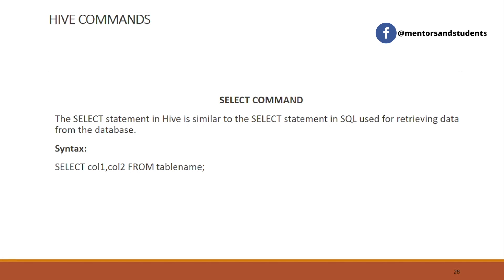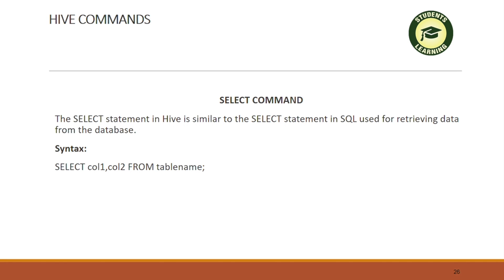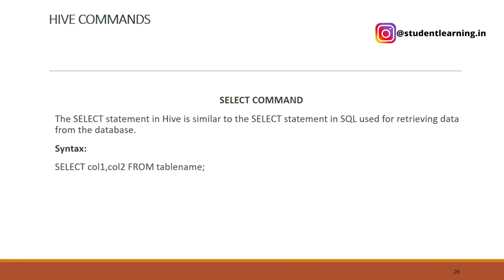The next command is select command. With the help of select command, we can retrieve data from the database. We write SELECT column_list FROM table_name. For example, to retrieve columns name, age, salary, id, designation from table emp: SELECT name, age, salary, id, designation FROM emp.